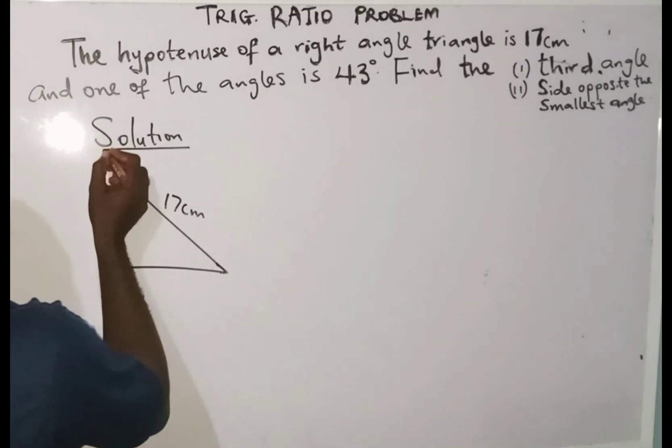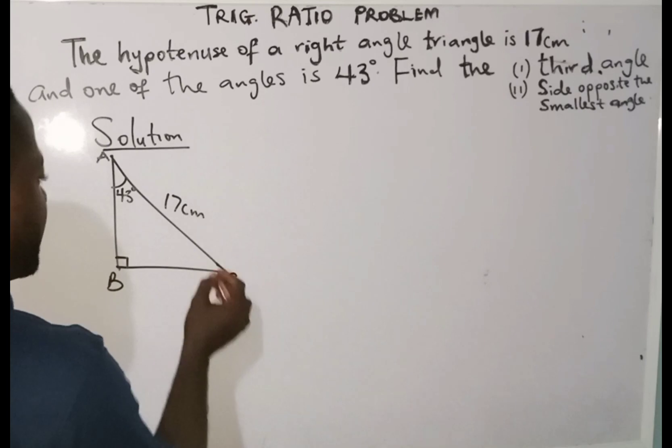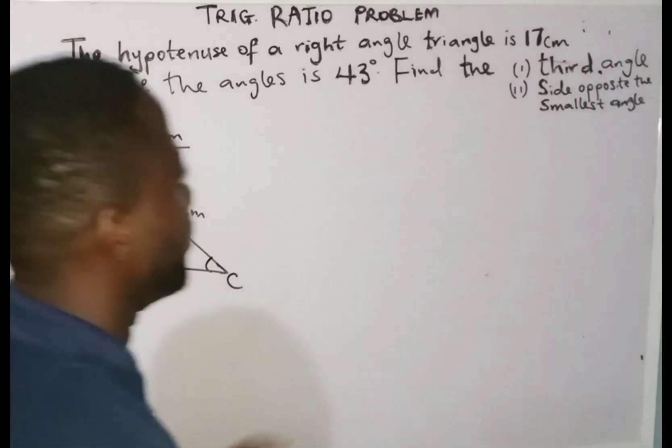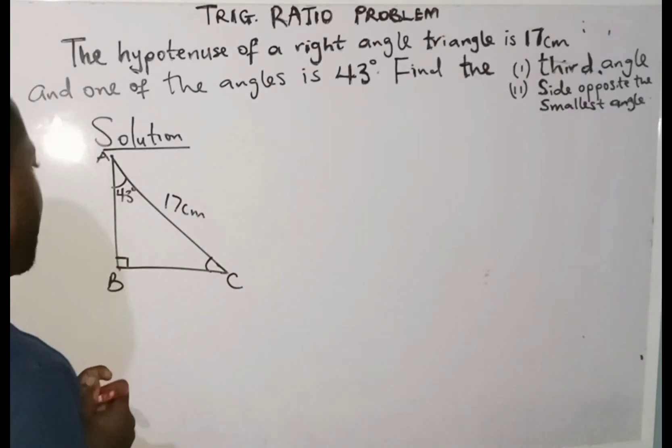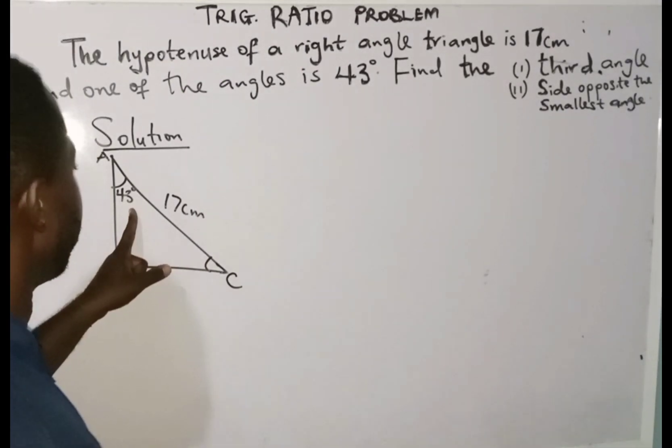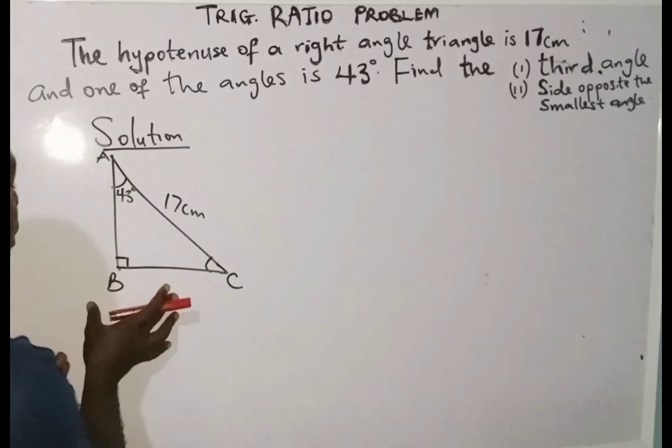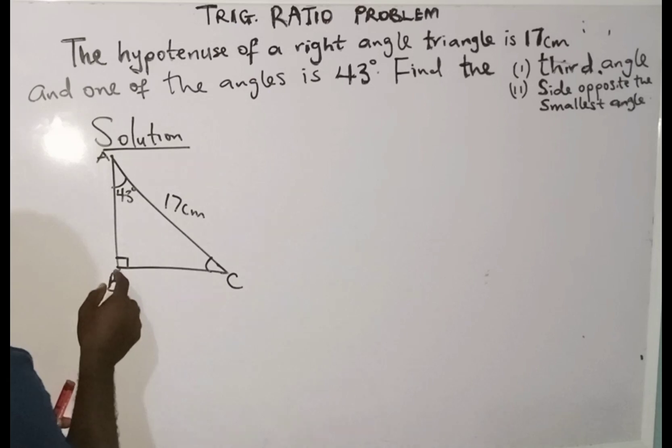Now, I can name the angles: angle A, B, and C. So this is the remaining angle. Now, we are asked to find the third angle. That means we are asked to find this because we have been given two: this is 43 degrees, and since what we draw is a right-angle triangle, then this is going to be 90 degrees.